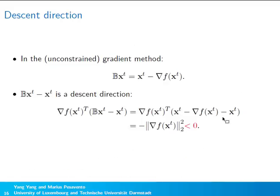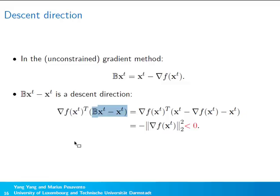In the classic gradient method for unconstrained optimization, bx_t is obtained by moving from the current point along the direction opposite to the gradient. This is a descent direction because the inner product between the gradient and the update direction equals the negative squared norm of the gradient, which is always negative.